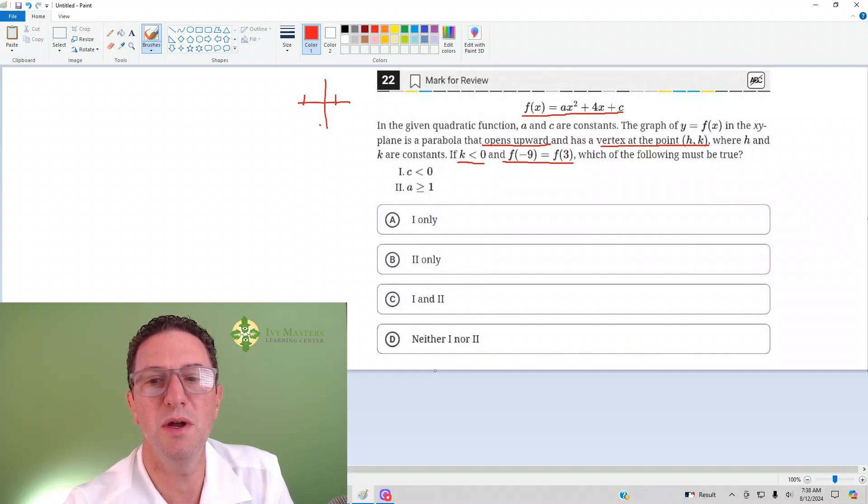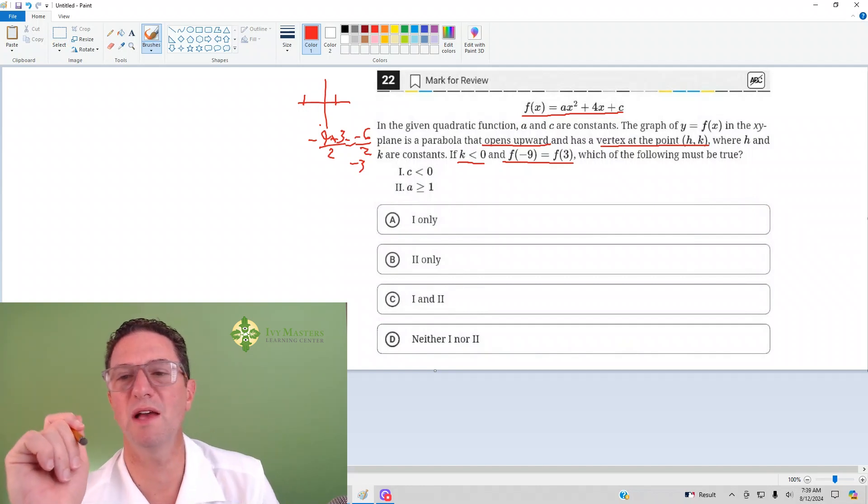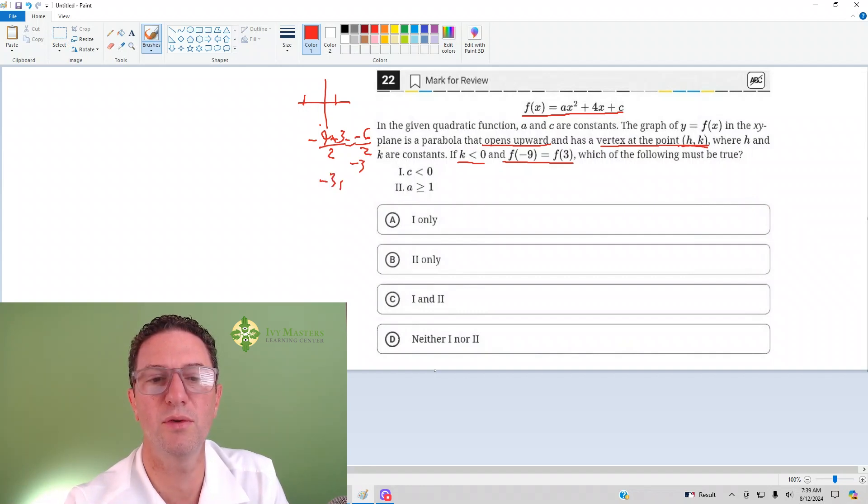If we do (-9 + 3)/2, we get -6/2, which equals -3. So -3 has to be the x part of the vertex. Since the vertex is at point (h, k), we've got that it's (-3, k).